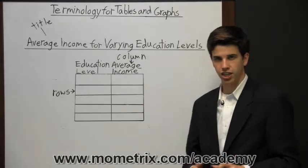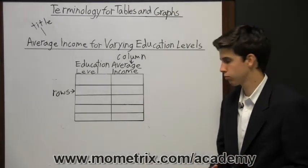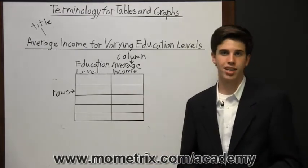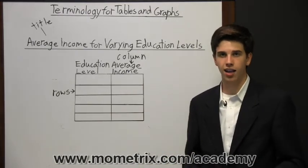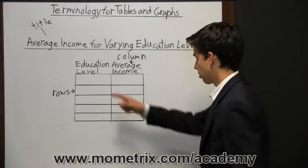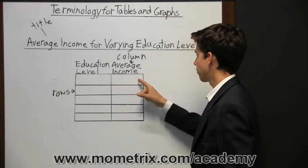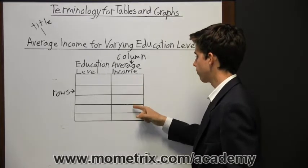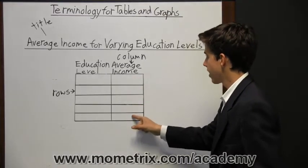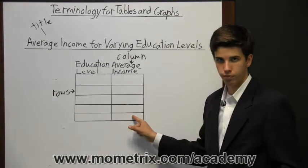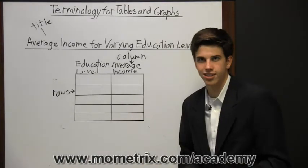Now the actual information is placed in what we call cells, which are the boxes you see here. We could identify a cell by saying the cell in the second column in the fifth row. So we would go to the second column, which is this column right here, and we would go down to the fifth row: one, two, three, four, five. So this is the cell in the second column on the fifth row, and then there'd be information in that cell right there.